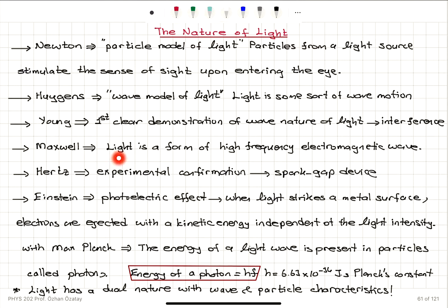Maxwell says light is a form of high-frequency electromagnetic wave. Solving Maxwell's equations — especially the third and the fourth ones regarding the path integrals of the electric field and magnetic field — the simultaneous solutions show that electromagnetic waves travel with the speed of light, which is direct proof.